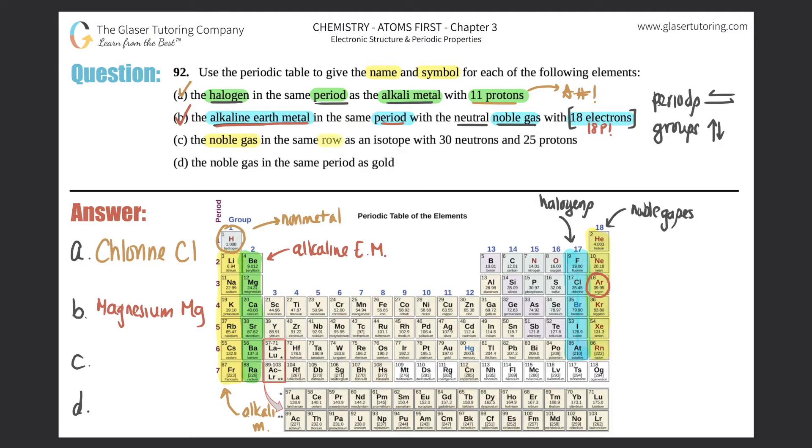Next we want the noble gas in the same row as an isotope with 30 neutrons and 25 protons. We need to find a noble gas that's in the same row as the isotope with 30 neutrons and 25 protons. What element is this? We can always find the element from its atomic number.